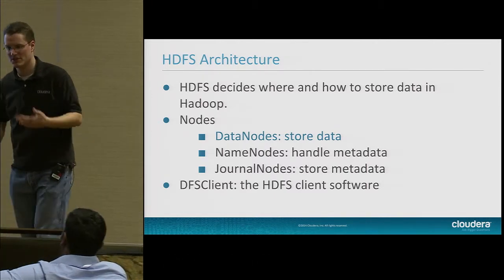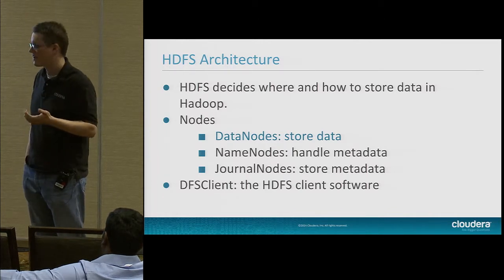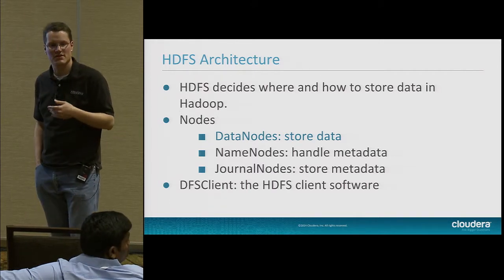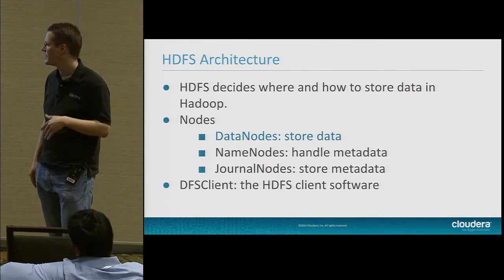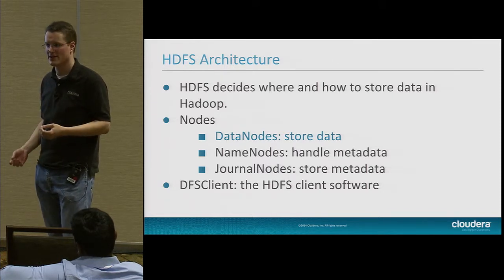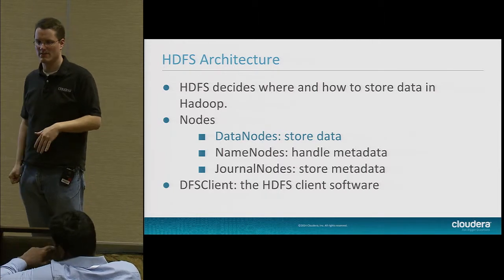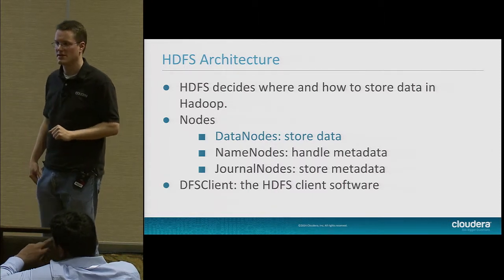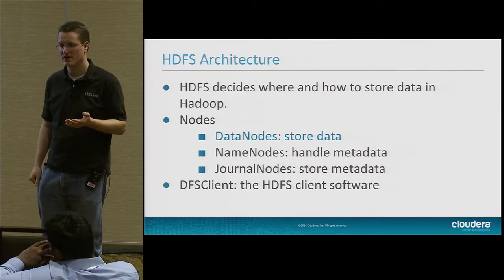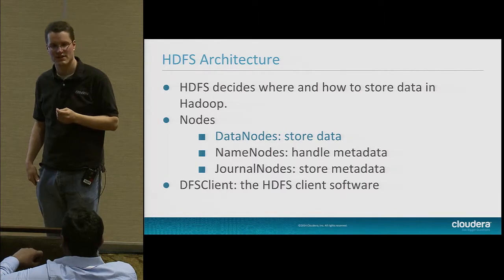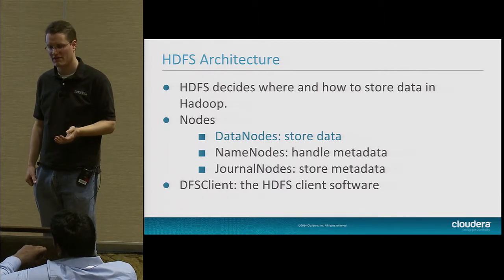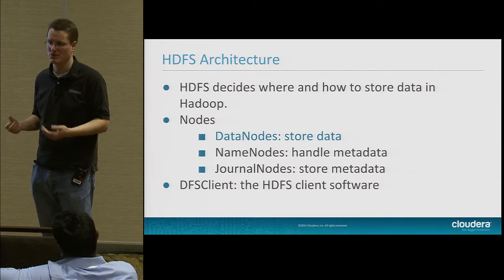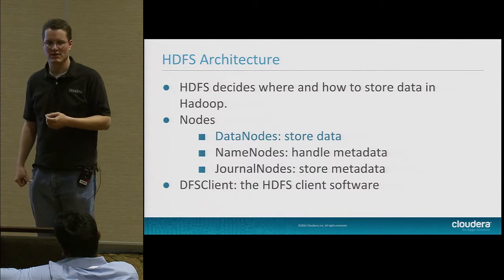HDFS is the Hadoop distributed file system — it decides where and how to store data in Hadoop. With HDFS we have data nodes that store data, a name node which handles metadata, and journal nodes which store metadata. I'll also be talking about the DFS client — the HDFS client software you use to interact with HDFS. It's still the most high-performance and feature-rich interface.